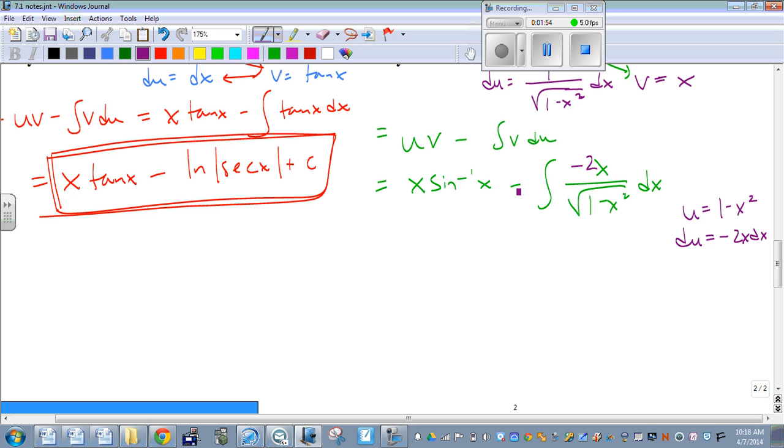But then we have to multiply the outside by negative 1 half, so it's going to be like positive 1 half with that negative there. And now this part is going to become our du, and this part is going to become our u.